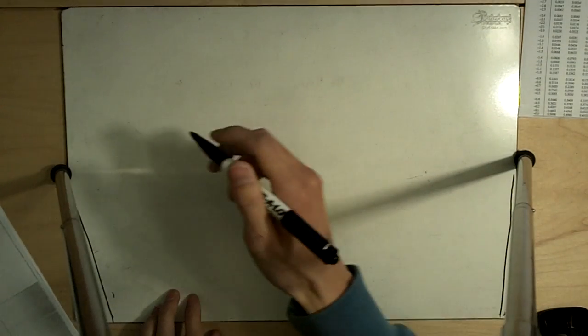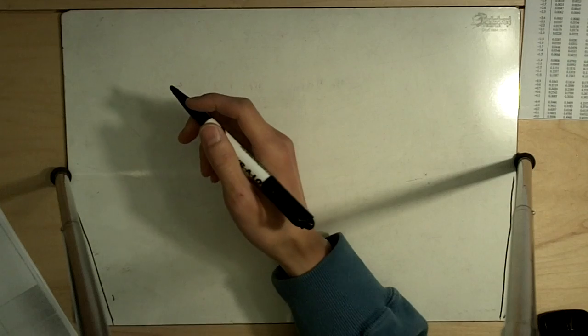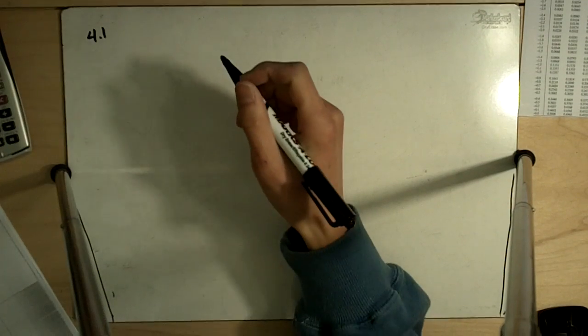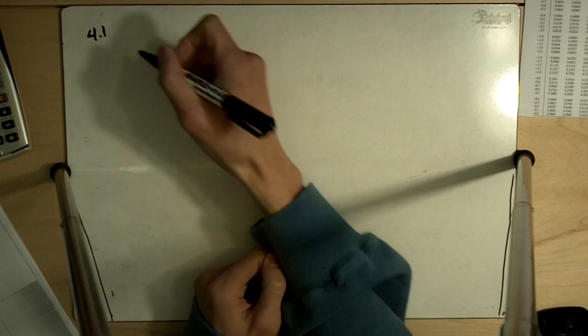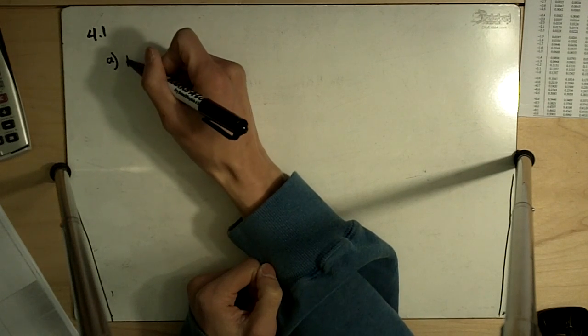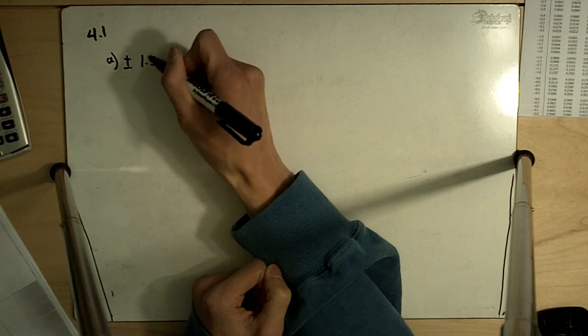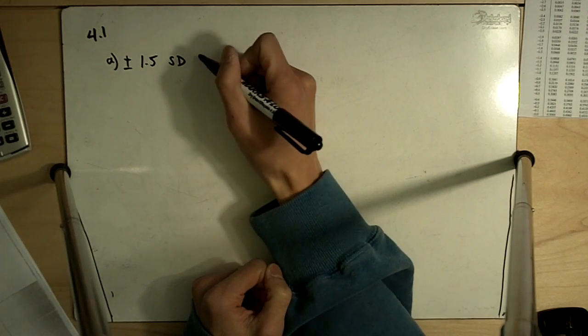Exercise 4.1 reads: Suppose a certain population of observations is normally distributed. What percentage of the observations in the population are within plus or minus 1.5 standard deviations of the mean?